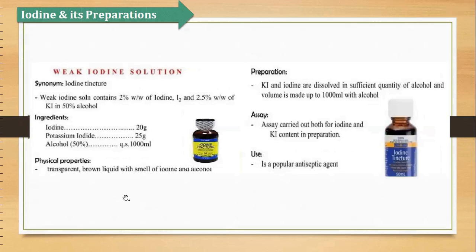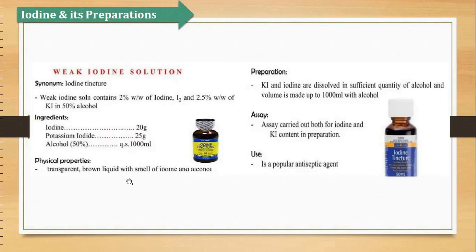Then is the weak iodine solution. Weak iodine solution mein 2% weight by weight iodine hai, plus 2.5% potassium iodide, in 50% alcohol. Quantities: 20 gram iodine, 25 gram potassium iodide, 8000 ml of 50% alcohol. Yeh bhi transparent brown liquid hai with the smell of iodine and alcohol. Isko use karte hain as antiseptic.